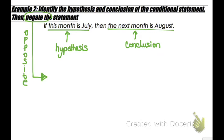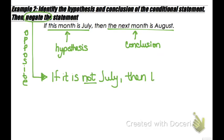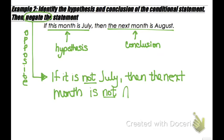The negation is: if it is not July, then the next month is not August. That's how we negate a statement — we take the opposite of the original.